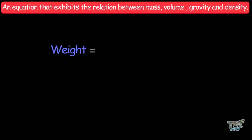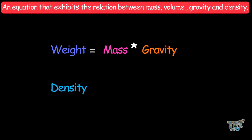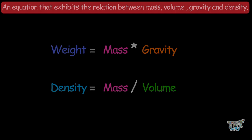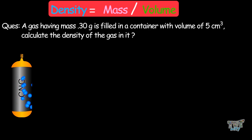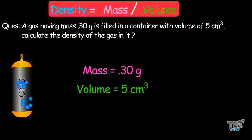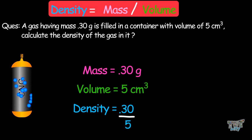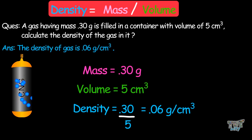Let's learn the equations relating mass, volume, gravity, and density. Weight is the product of mass and gravity. Density is mass divided by volume. For example, a gas with a mass of 0.3 grams filled in a container with a volume of 5 cubic centimeters: density equals 0.3 divided by 5, which is 0.06 grams per cubic centimeter.